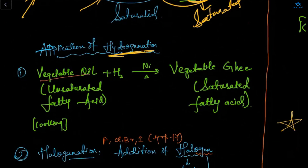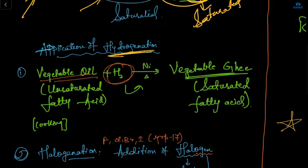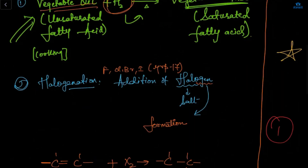Here is an application: vegetable oil plus hydrogen, in the presence of nickel as a catalyst, converts this vegetable oil into vegetable ghee. This is what we usually use for cooking purposes. Now this brings us to halogenation.